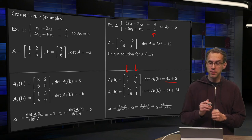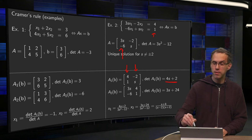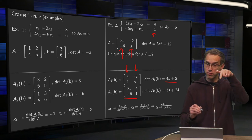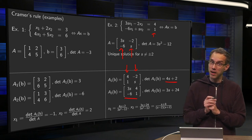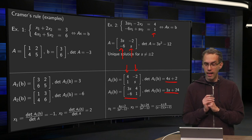And then A2(b). We keep the first column the same and then we put b as second column. So we get 3S minus 6 first column, 4, 1 second column. Compute determinant. 3S times 1 equals 3S minus minus 6 times 4 plus 24. So there you have your A2(b).